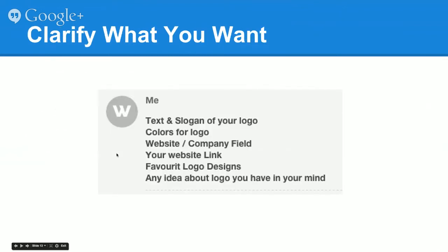Once you've picked a designer and placed your order, the very first thing you will get — particularly with logo design — is a request from the designer to provide information. In this case, you can see this designer has asked: what do you want your logo to say? Do you want a slogan? What colors do you want? What is the website this is going on, or what field of business are you in? Oftentimes the designer will look at your website and match the colors of the logo to work with what you've already got.